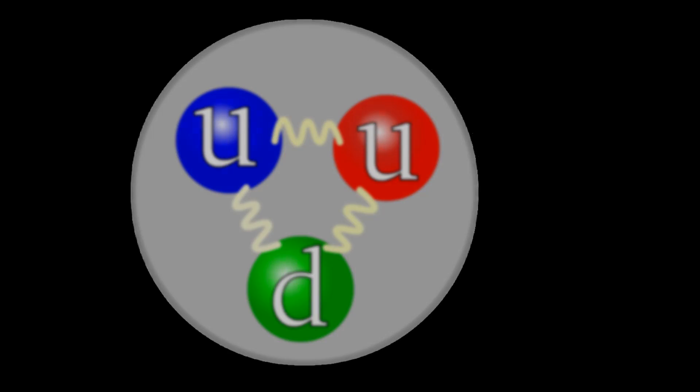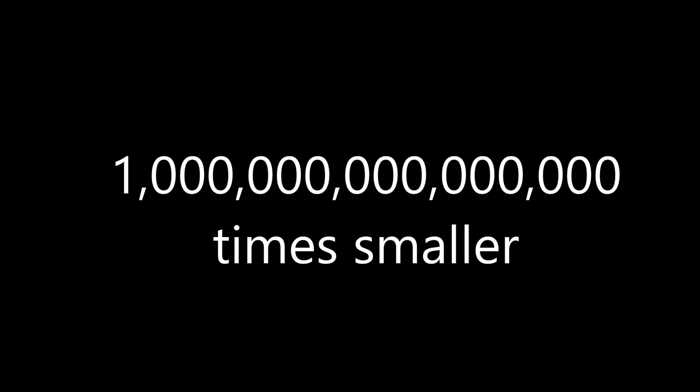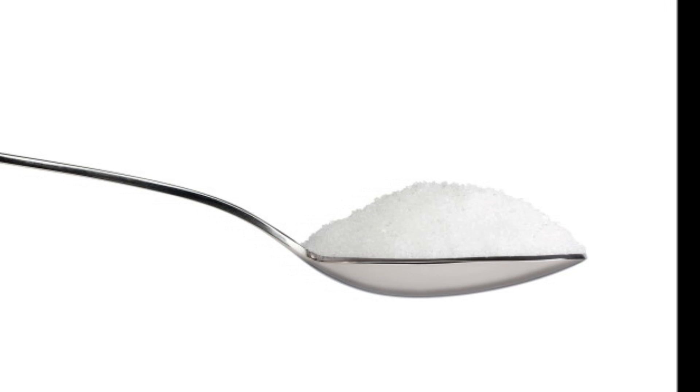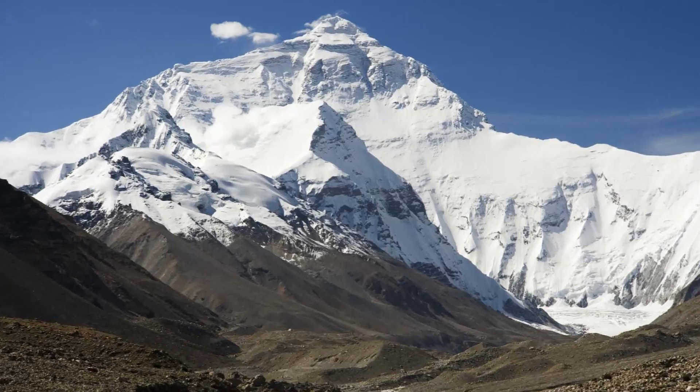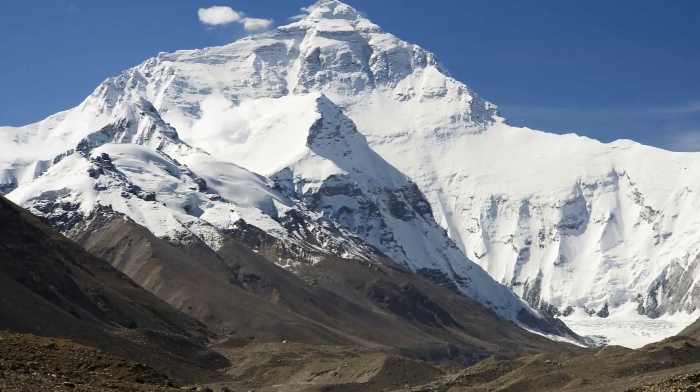For example, a single proton has a diameter of one quadrillionth of a metre. That's a million billion times smaller. In terms of density, nuclear material is so dense that just a teaspoon of it is the same mass as Mount Everest, or a trillion bags of sugar.